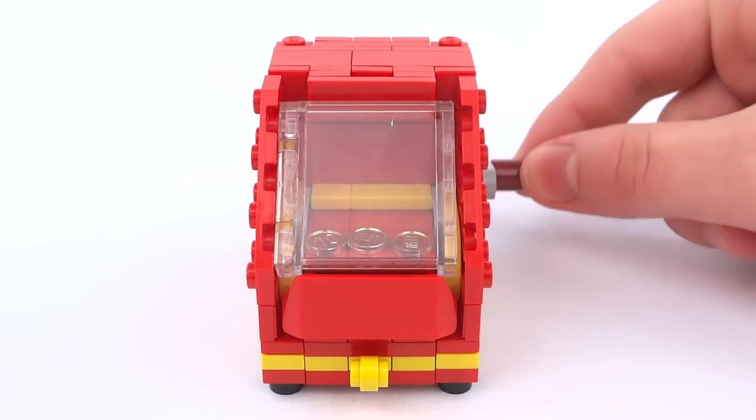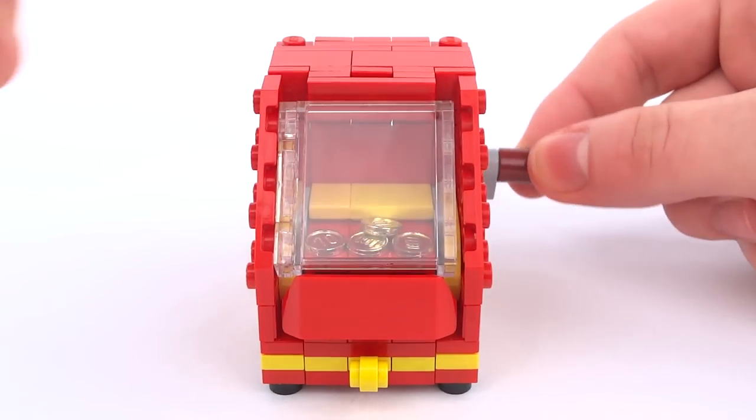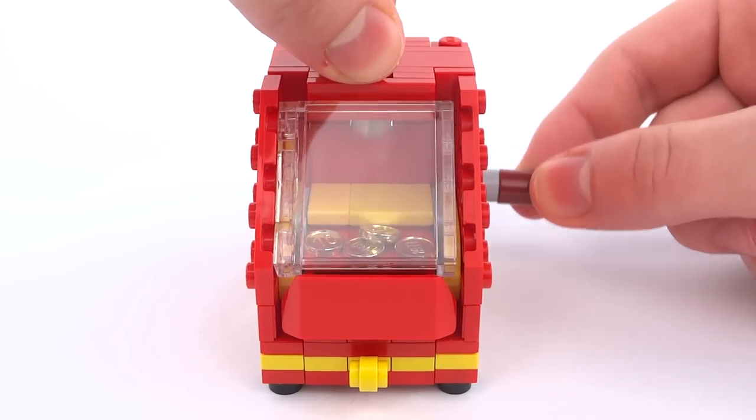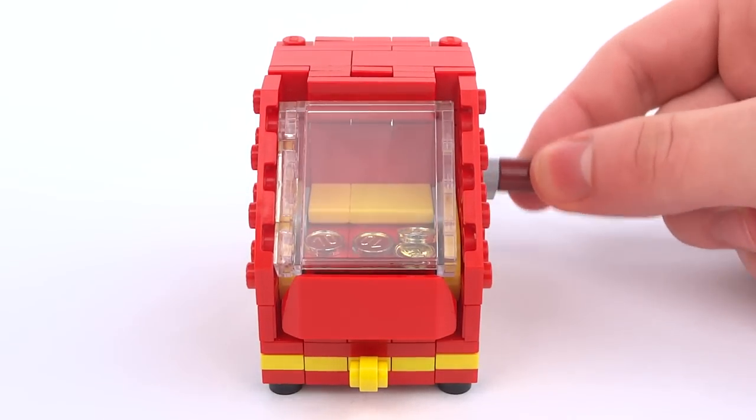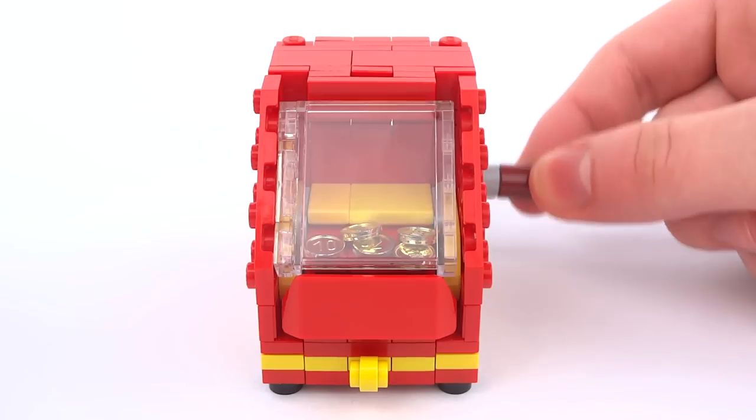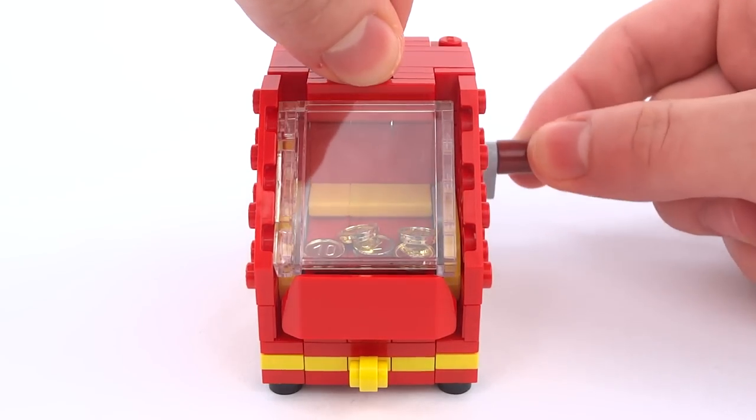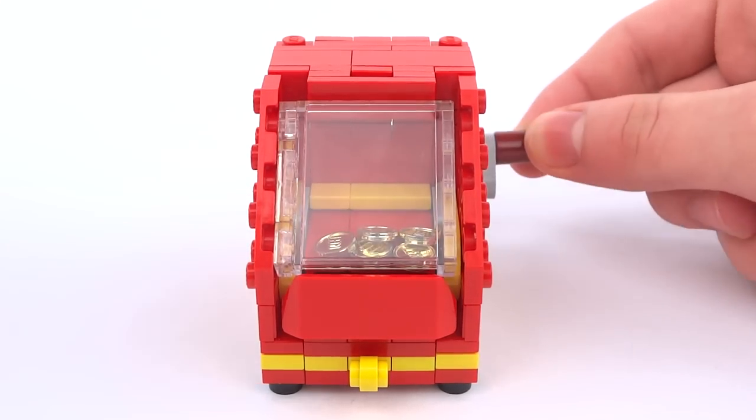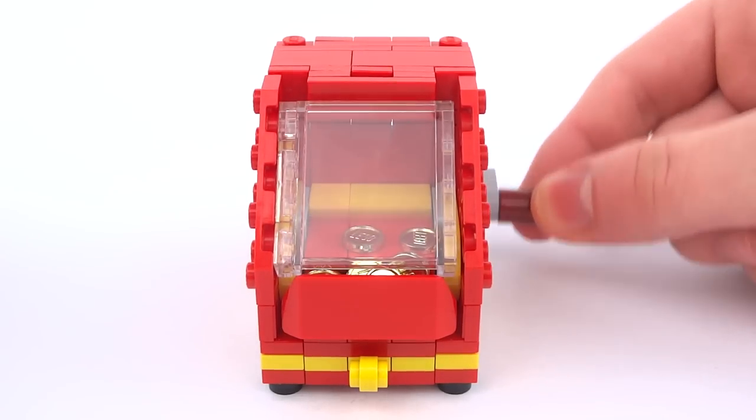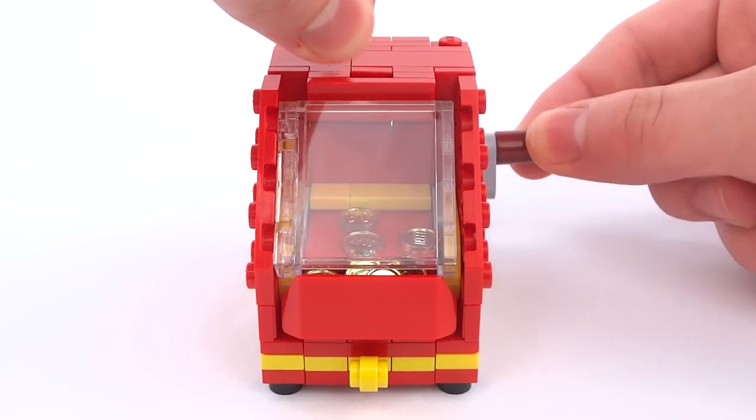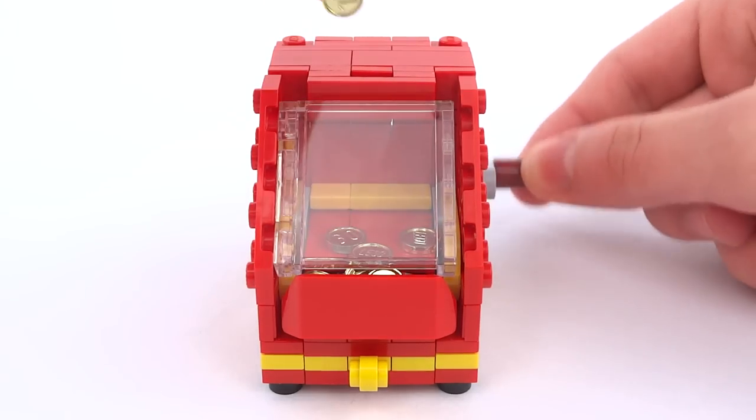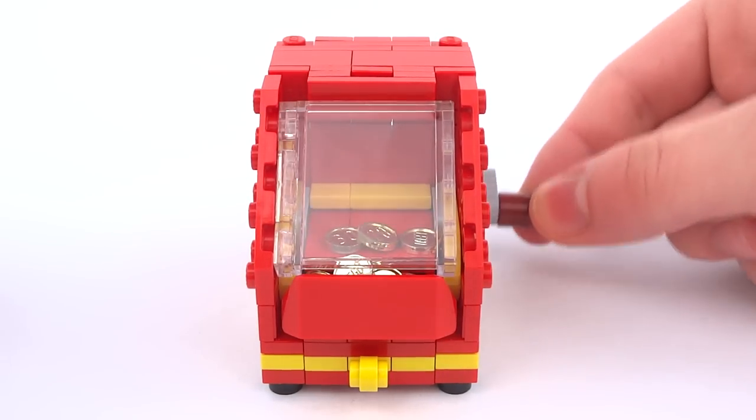Next up is the coin pusher where you drop coins or tokens onto the moving platform and try to win more than you started with. The coins at the back push the ones at the front, and sometimes they pile up, but other times you win big as they all drop down at once. You'll need to practice timing your drops just right to have the best chance of winning.